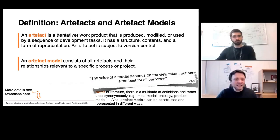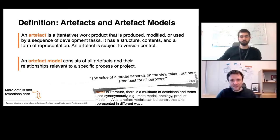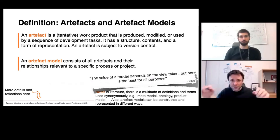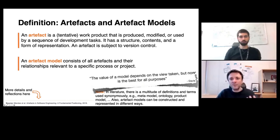In literature you will find many different terms for artifacts and artifact models — ranging from meta-models, ontologies, and taxonomies to work products or product models. There are also different ways of defining artifact models, depending on the purpose. Some artifact models are used for tool integration, while others are developed specifically to accommodate software process models. An artifact has structure, content, and a form of representation — there are three distinct perspectives we can take.